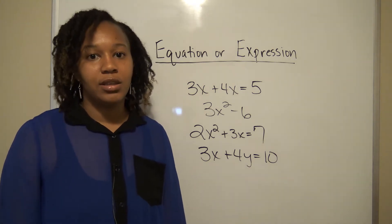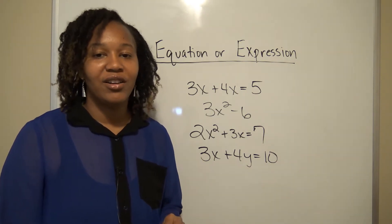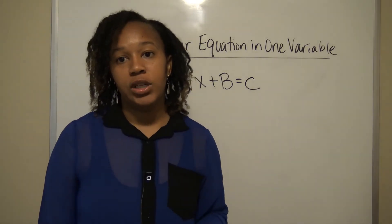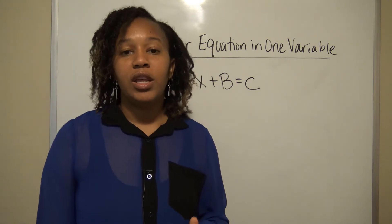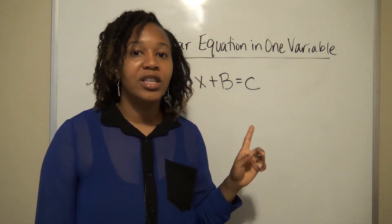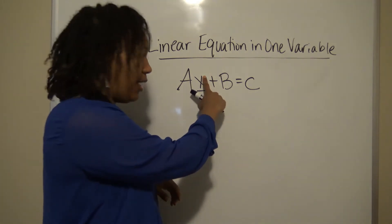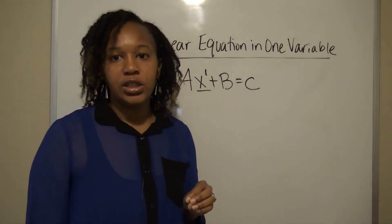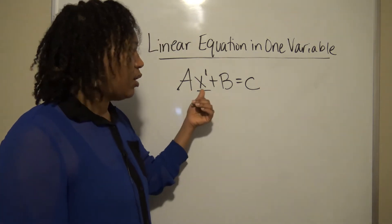Hopefully you can now identify an equation versus an expression. Next, we're going to learn how to solve equations — the different types and how to solve each. The very first type we'll talk about in algebra are linear equations in one variable. A linear equation has an equal sign, and it's linear when the highest exponent on your variable is one. When there is no exponent written, there's an understood exponent of one. When the highest exponent on your variable is one and there's only one variable, you have a linear equation in one variable.